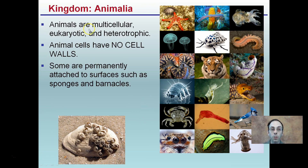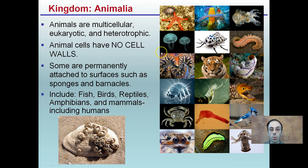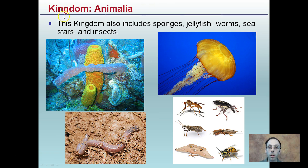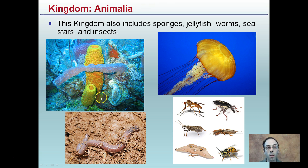Kingdom Animals: animals are multicellular, eukaryotic, and heterotrophic. A major point is that animal cells have no cell walls — if a cell wall is present, you can eliminate the kingdom of animals as a classification. Some are permanently attached to surfaces such as sponges and barnacles. This kingdom includes fish, birds, reptiles, amphibians, mammals, and humans, as well as sponges, jellyfish, worms, sea stars, and insects. Coral and sponges are often mistakenly thought to be something other than animals, but they are.